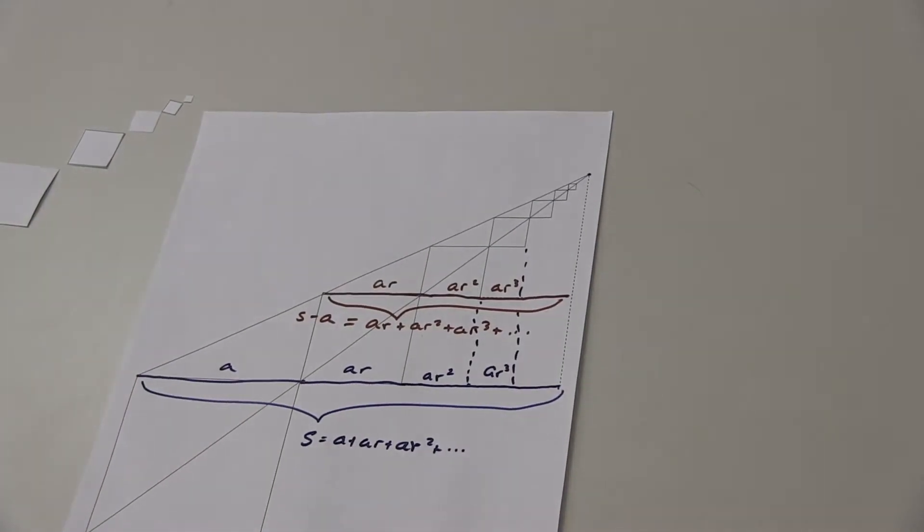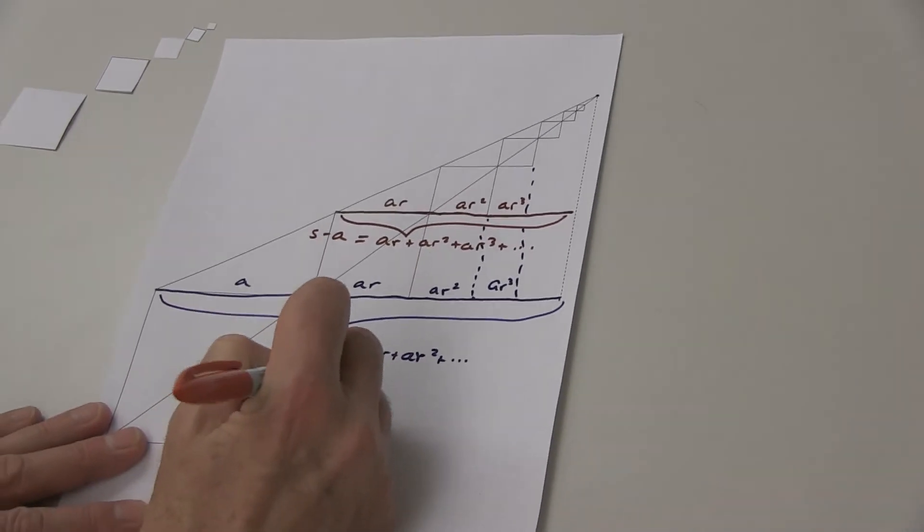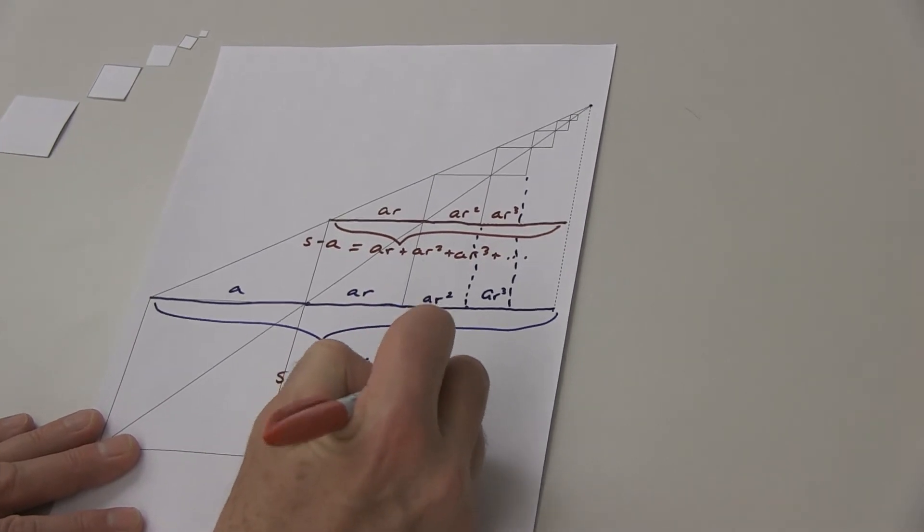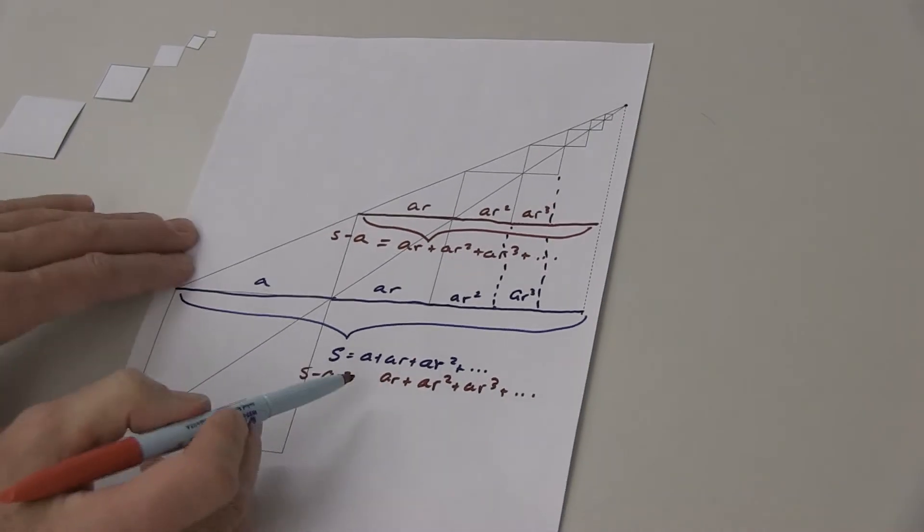Well, there's one other way they're related. You might notice, I'm going to write down S minus A. S minus A is A*R, A*R squared, A*R cubed. There's a match up here.